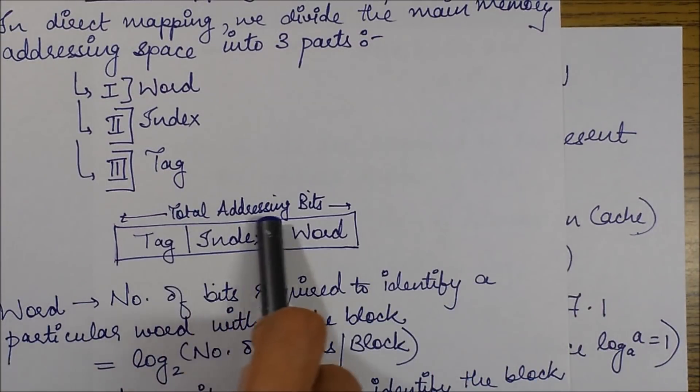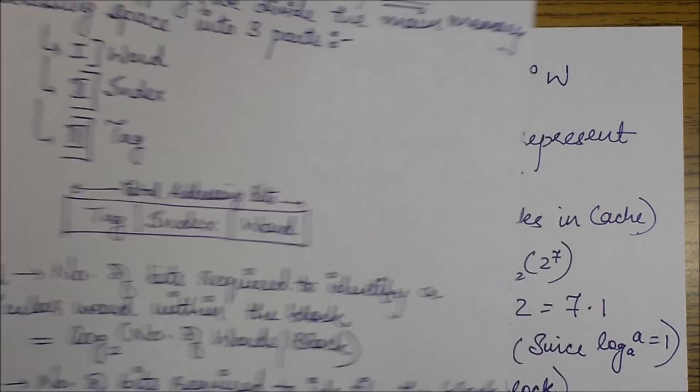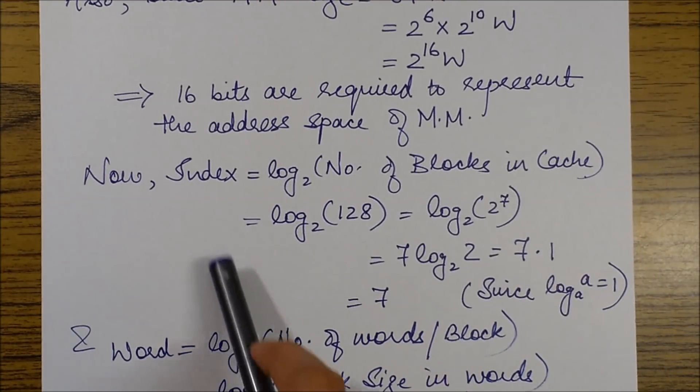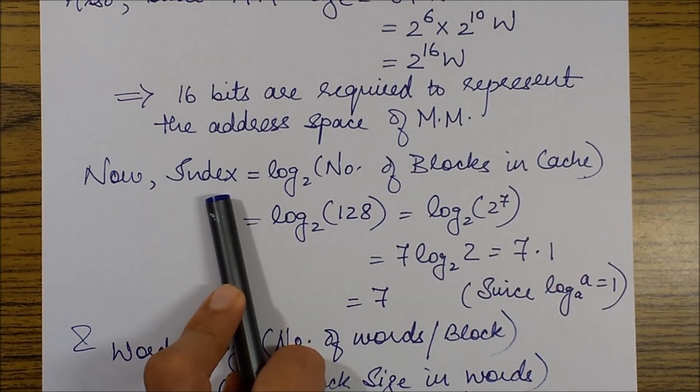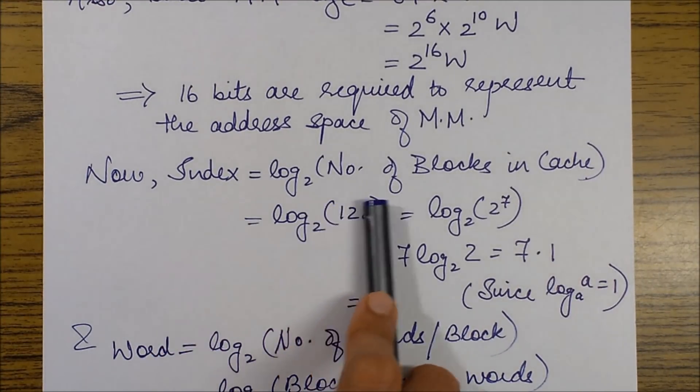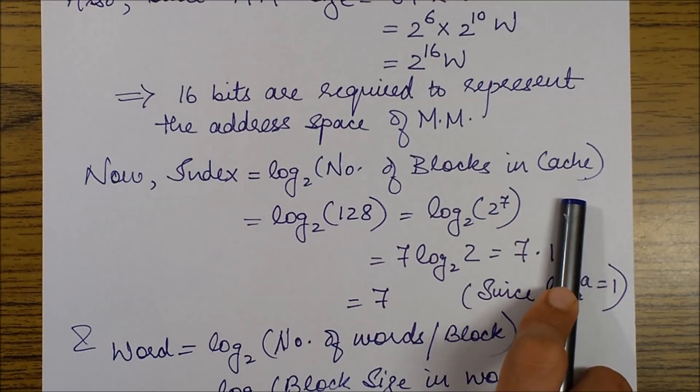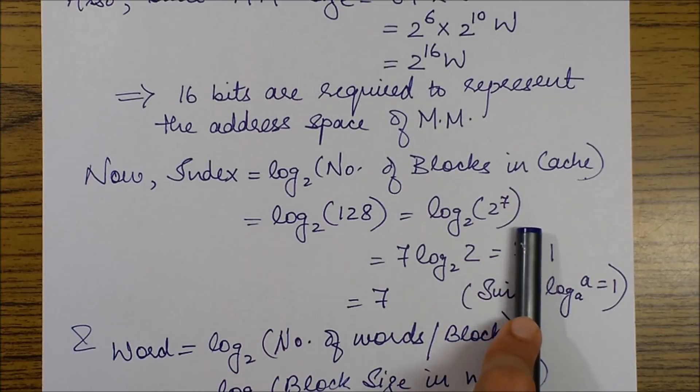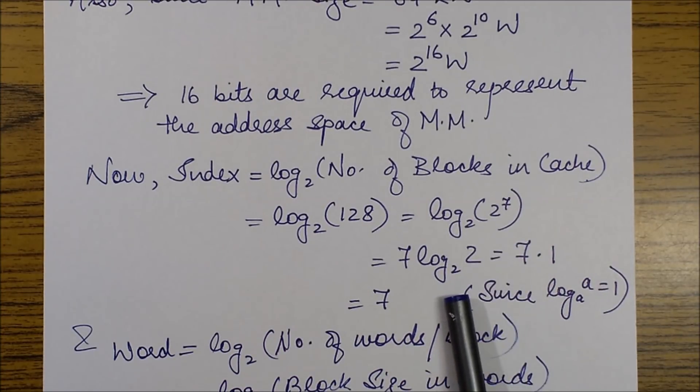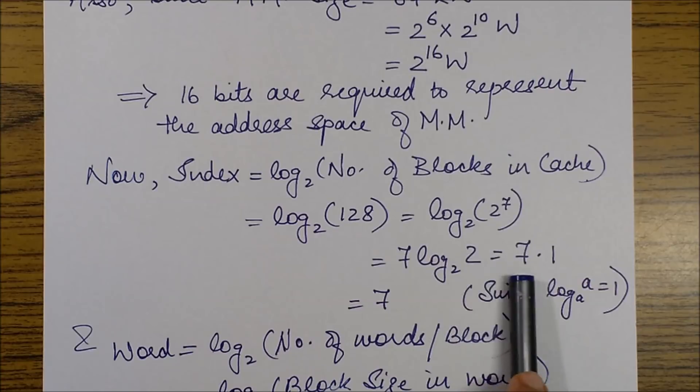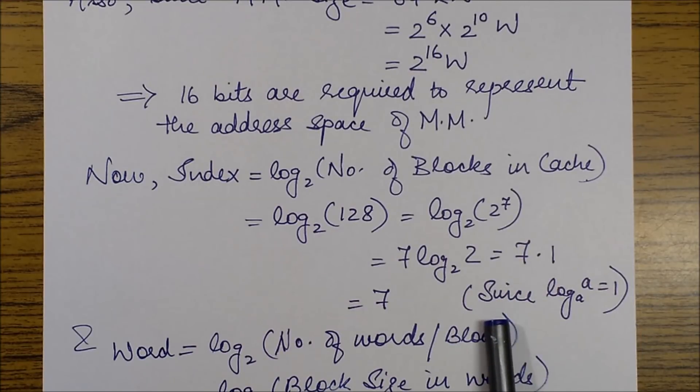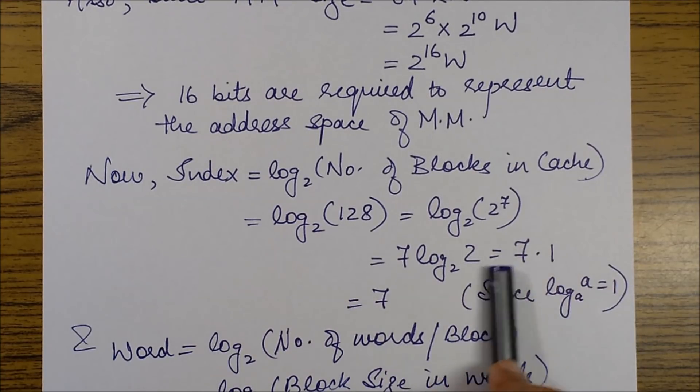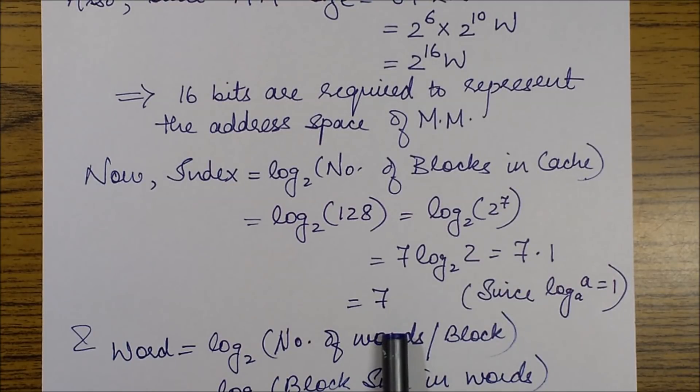This total addressing bits would be 16. Now let's find the index bits. The index bits equals log₂(number of blocks in cache). We've been given that the number of blocks in cache are 128, so that means log₂(2⁷) which equals 7.